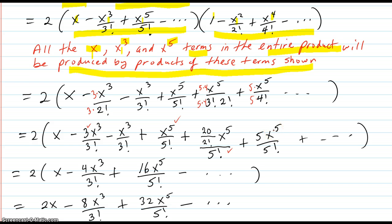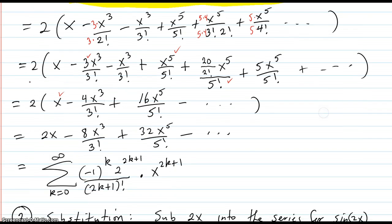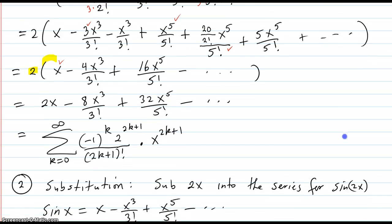So now, I'm ready to add everything up. I get x, I have -3 - 1 is -4. And then I have here, 20 divided by 2 factorial, that's 2, that's 10, 11, 16. 16x⁵ over 5 factorial, and it was 2 times that. So I multiply that in to every term and got this. And then I see the pattern.